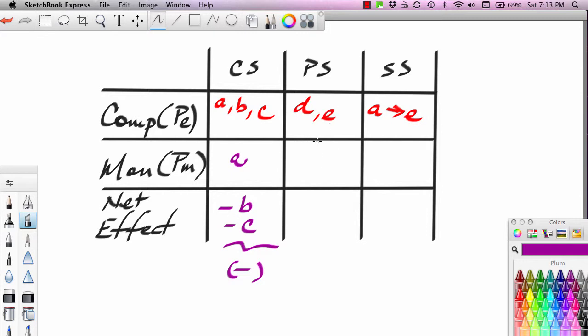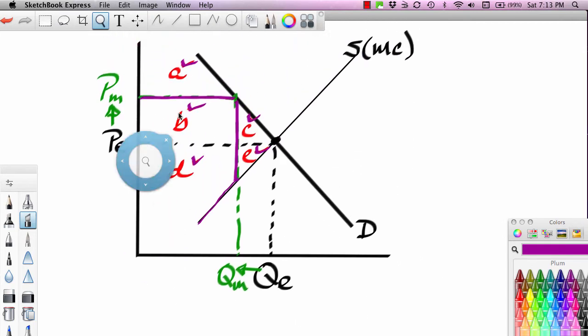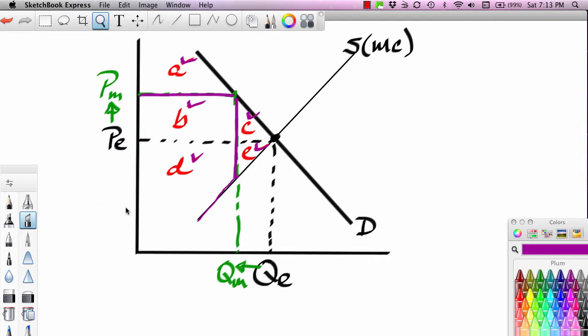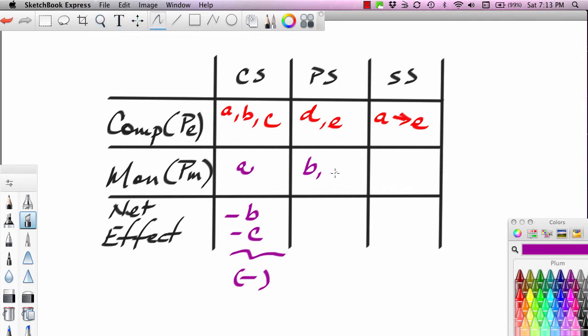What do producers get? Producers pick up area B and, let's just go up and look at it again so you can see it, because it's a little bit confusing. Producers pick up area B and D. Producers used to get E, D and E. Now they get B and D. So they've picked up B and they've lost E.